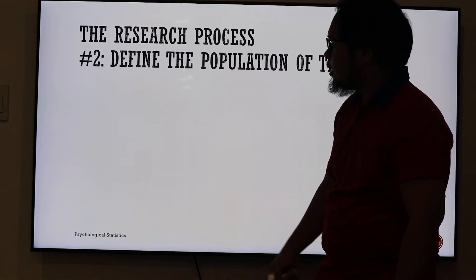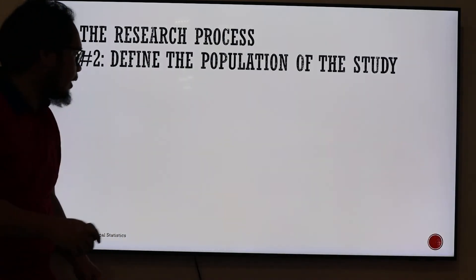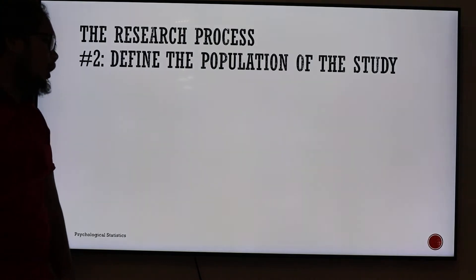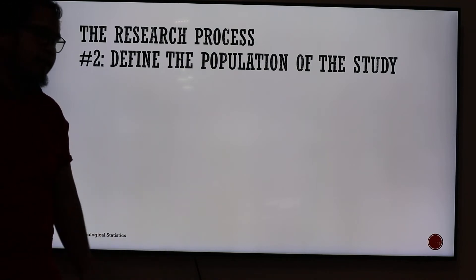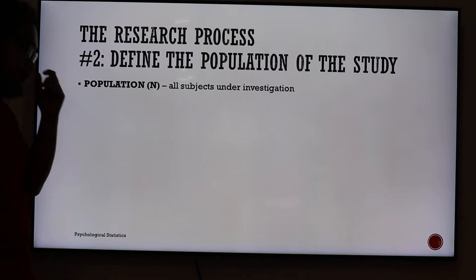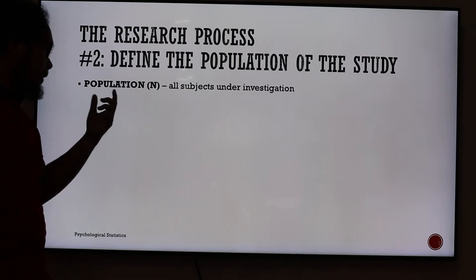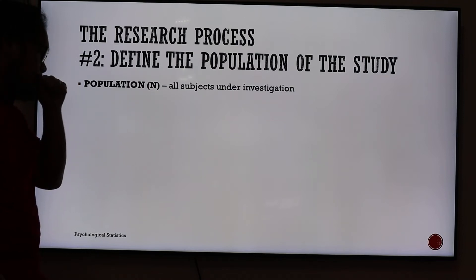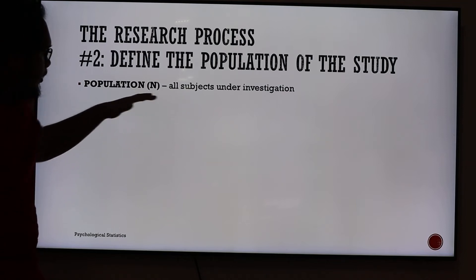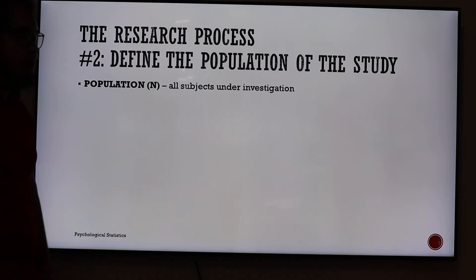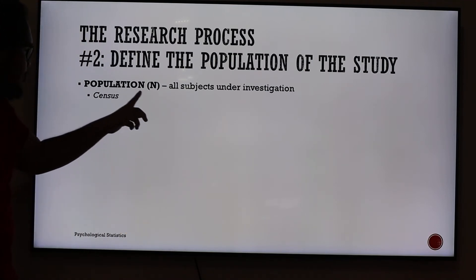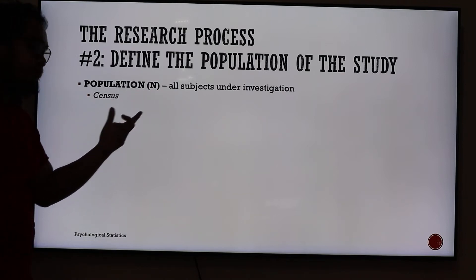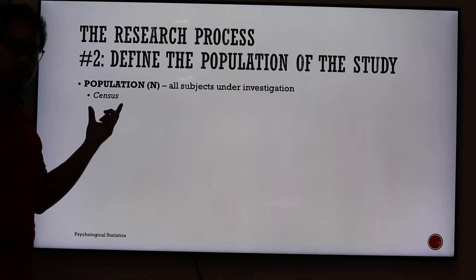Number two: we should define the population of the study. When you look at demographics, population is the number of people within a certain area. But in statistics, population — denoted by capital N — denotes all subjects under investigation, not necessarily human beings in their entirety. But of course, when we're dealing with psychological statistics, it should be human beings. When you take all of the data from the population, you take all of it. We call it a census.